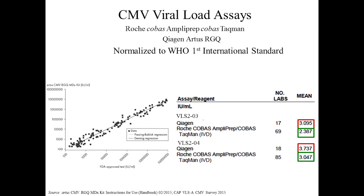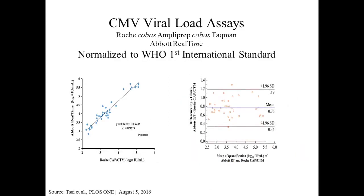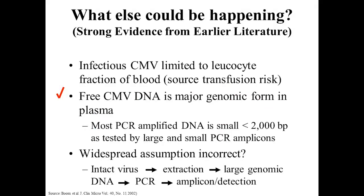Comparing these two FDA assays, overall they had good correlation, but their patient bias ranged from 0.4 to greater than one log, with an average bias of 0.76 log. There are other things that could be going on, and some really nice review papers have pointed out important hints. Scientists stand on each other's shoulders, and earlier work that wasn't fully appreciated has become relevant again in the case of the CMV story.